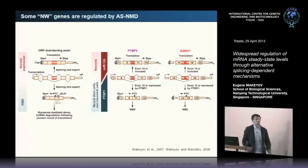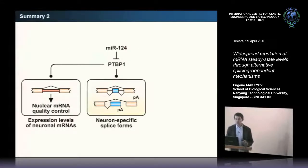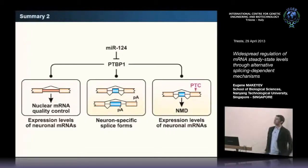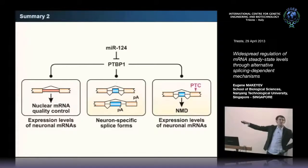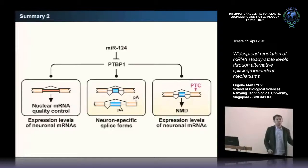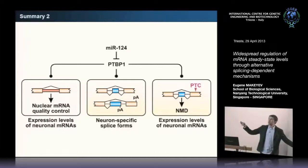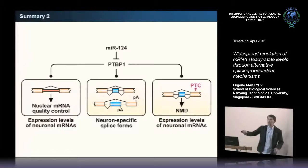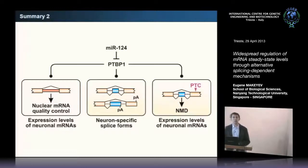When PTB is knocked down by microRNA-124, as happens in neurons, these exons are allowed to be included, leading to accumulation of two proteins: neuronal PTB—a cousin of PTB—and a GABA receptor subunit contributing to inhibitory synapses. We can now add to this diagram another link where PTB represses open reading frame-maintaining exons. Alternative splicing changes, expression level changes through nuclear quality control, and expression level changes through cytoplasmic control are all orchestrated by a single protein—which is quite impressive.